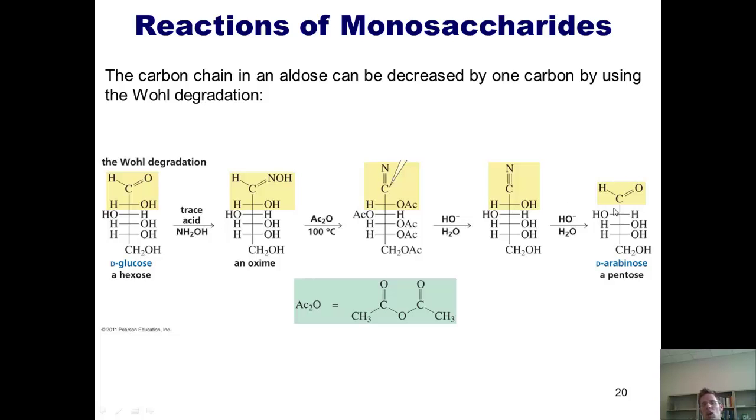So let's take a look again at the sequence of reactions, the Wohl degradation. I begin with this sugar, and I'm in a position where I want to have a sugar that has one carbon less. I take it, heat it up with trace acid and hydroxylamine, and I generate this oxime. I then take that oxime and treat it with acetic anhydride. It affects an elimination reaction or a dehydration, which gives me this nitrile.